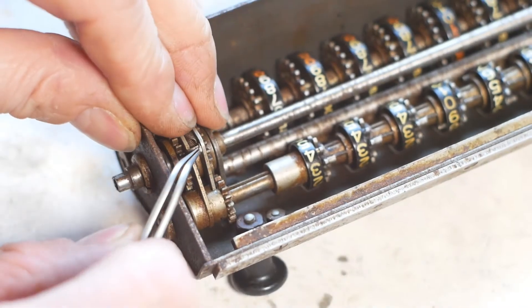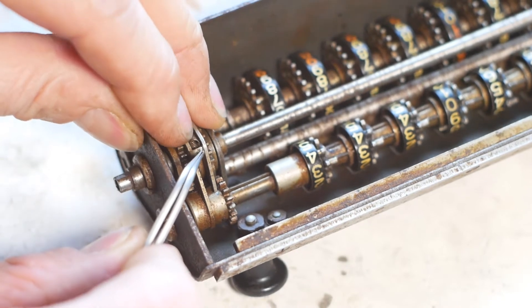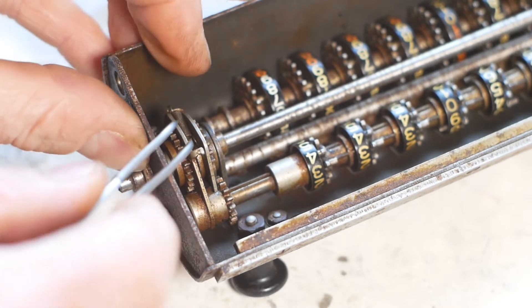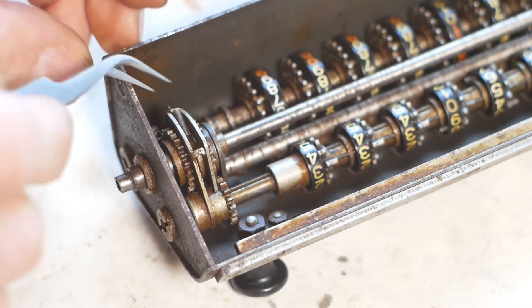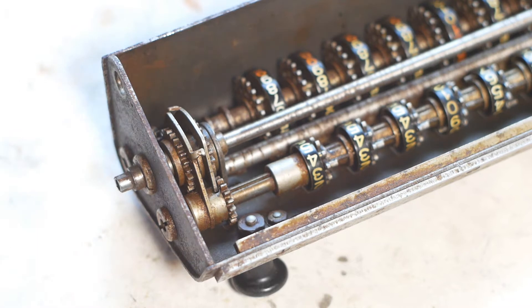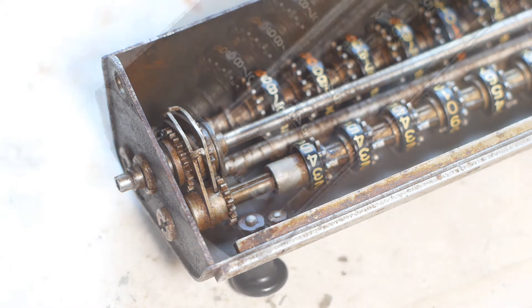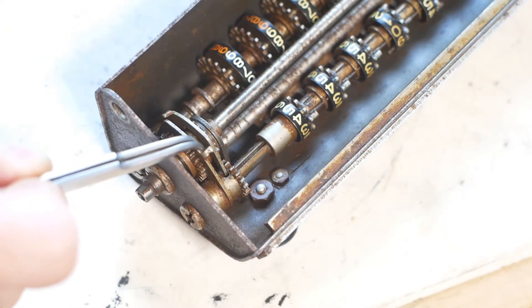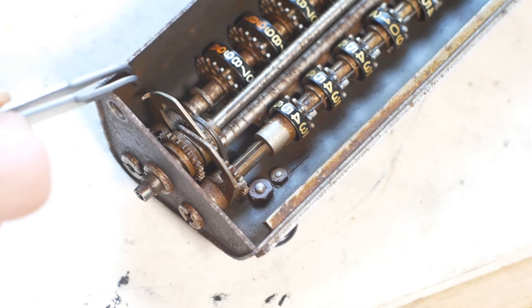Next is to remove this spring that puts tension on the two levers that prevent the wheel shafts from turning when the clearing handle is in its resting position. I'll put that safely in a tray so it doesn't get lost. Now that the spring is off, I can safely move the levers out of the way.